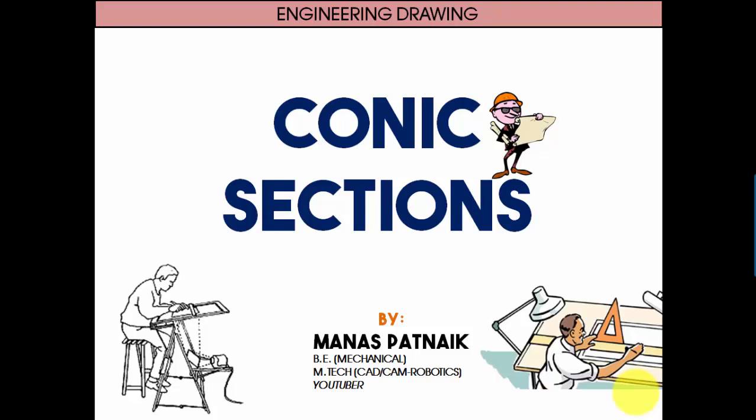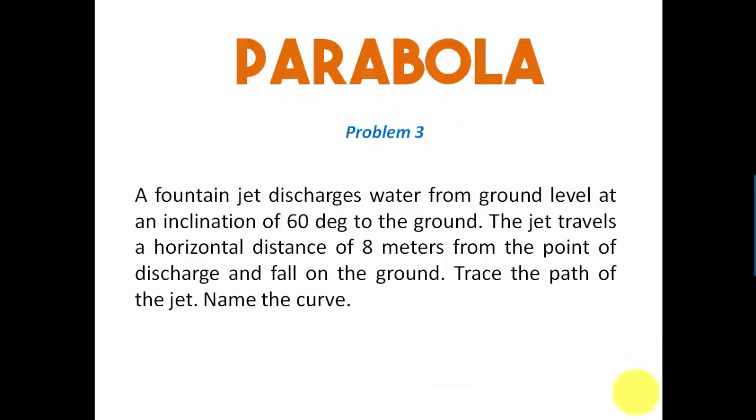So let's see what this particular problem has in store for us. A fountain jet discharges water from ground level at an inclination of 60 degrees to the ground. The jet travels a horizontal distance of 8 meters from the point of discharge and falls on the ground. Trace the path of the jet and name the curve.